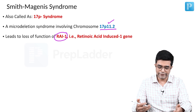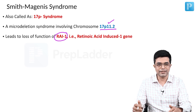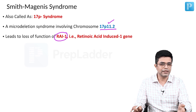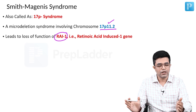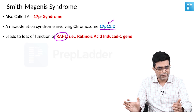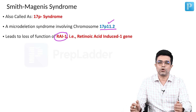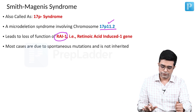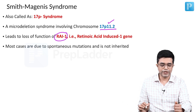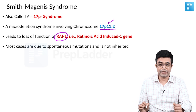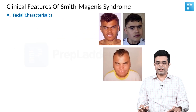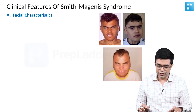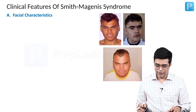Patients with Smith-Magnese syndrome often have problems related to behavioral issues and circadian rhythm abnormalities. Most cases occur due to spontaneous mutations and are not found to be inherited. Let us now talk about the facial characteristics in these children.